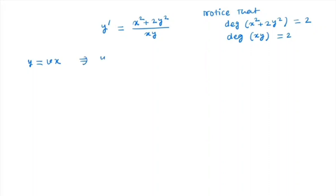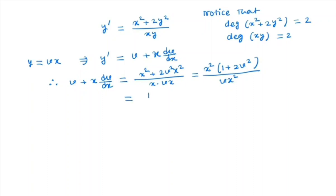So by differentiating we have y prime is equal to v plus x dv dx. So if we put this in the original equation we have v plus x dv dx is equal to x square plus 2y square, that means 2v square x square, and x times vx. So if we common x square we have 1 plus 2v square and in the denominator we have vx square. So by cancelling x square we have 1 plus 2v square by v.